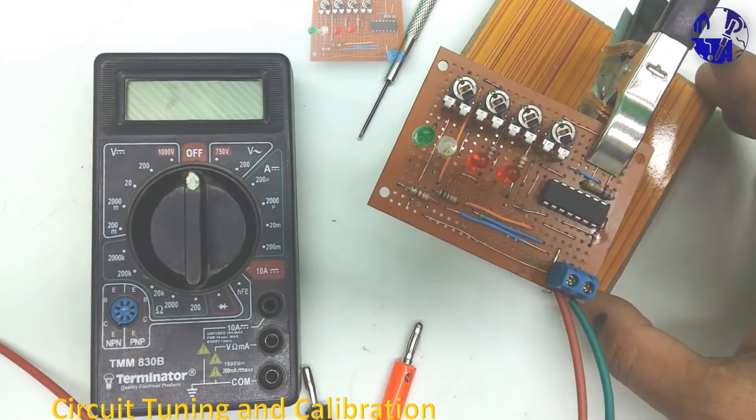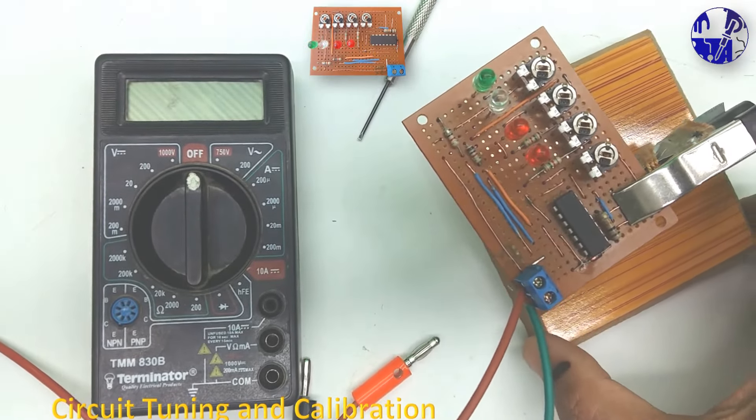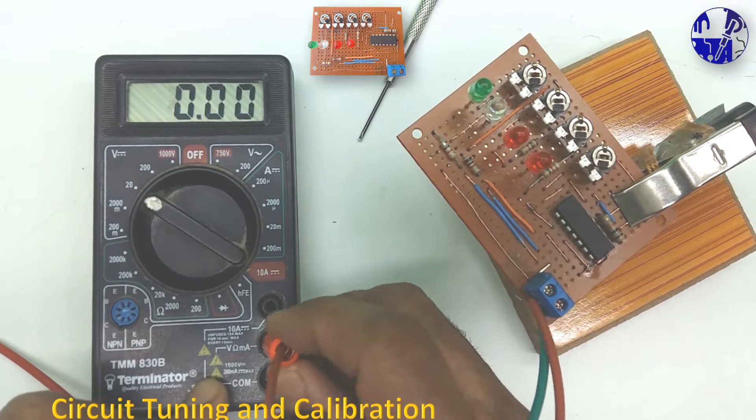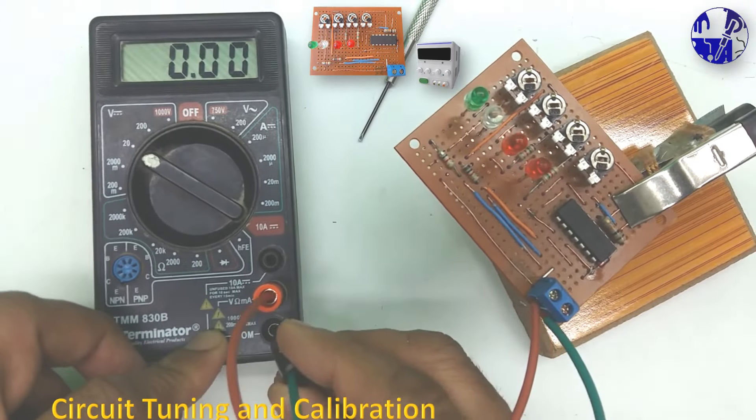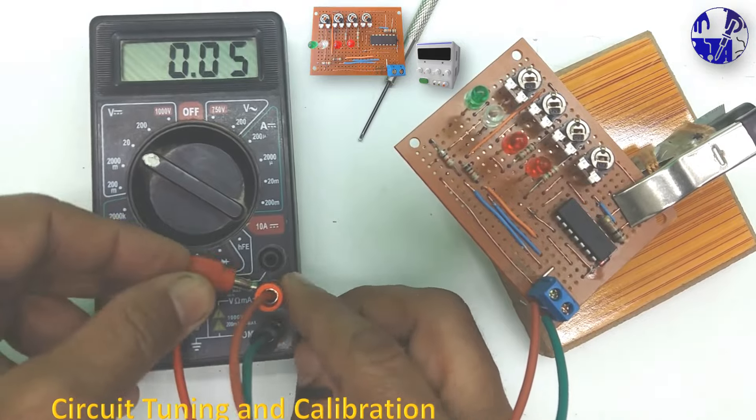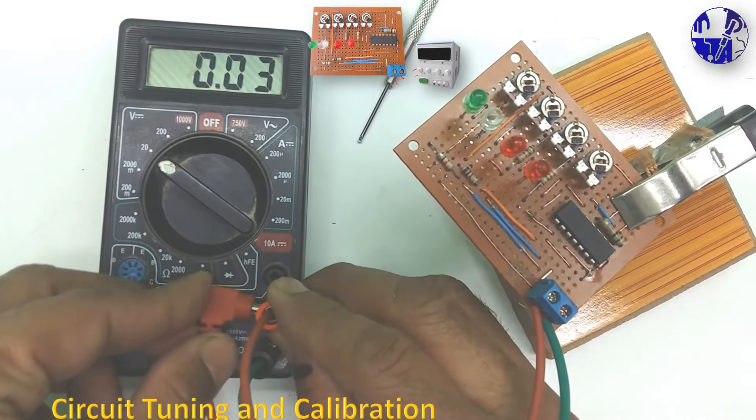Now it is time to calibrate the battery level indicator. After installing all components on the vero board, ensure each LED accurately indicates the battery voltage level.